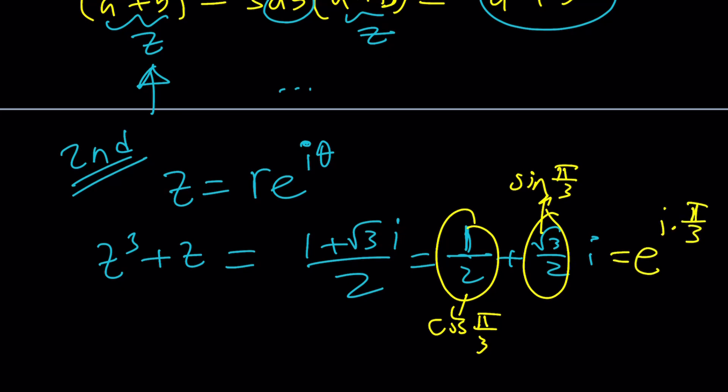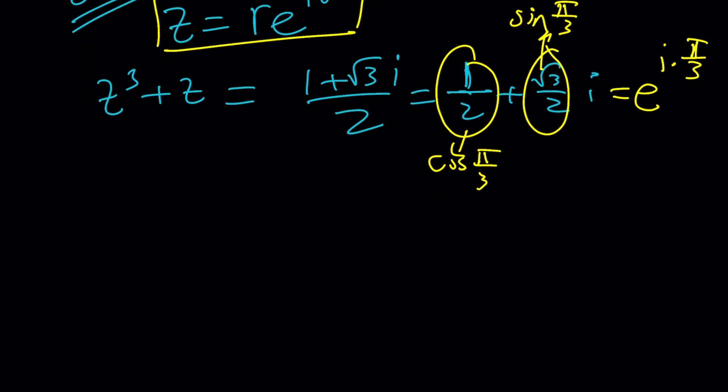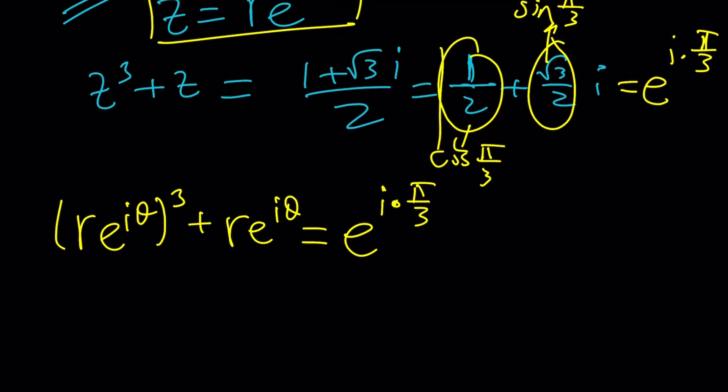So now this can be written in polar form as e^(iπ/3). Beautiful. We were able to write z in polar form, we were able to write our constant in polar form. Let's put it together and make it all polar. So now, if you put it together, we're going to get re^(iθ) cubed plus re^(iθ) equals e^(iπ/3). But wait a minute, where is the r? r is 1 because this is a complex number with modulus 1.